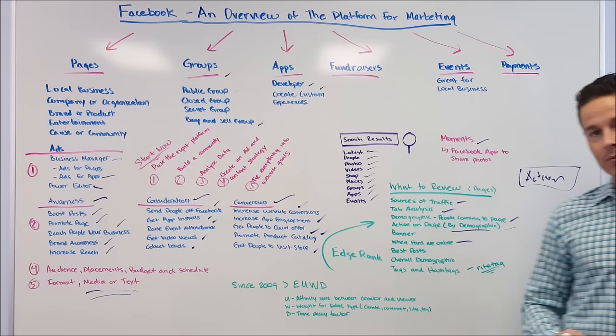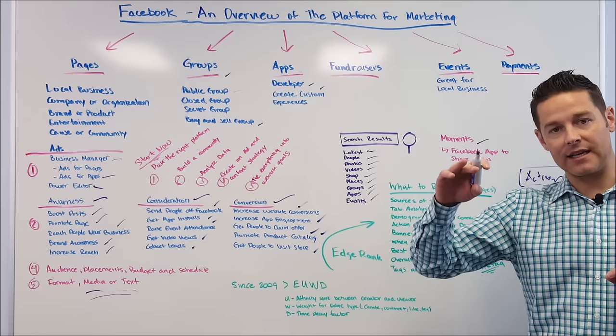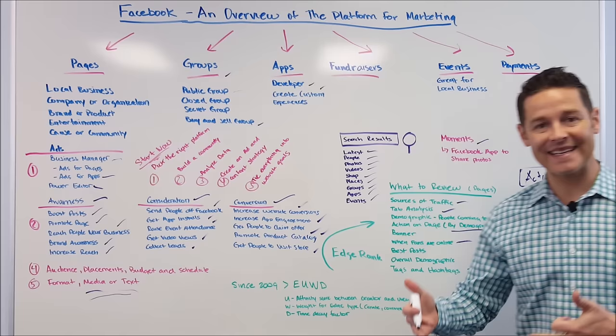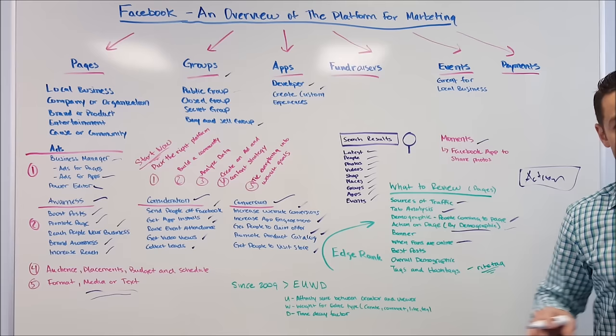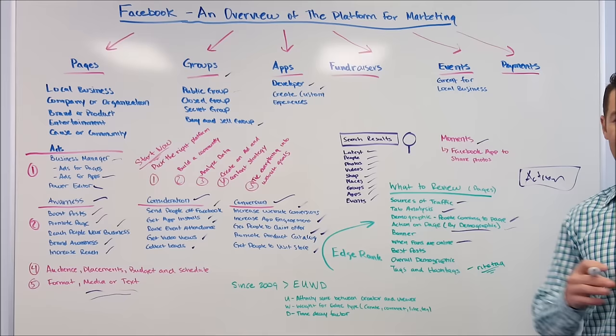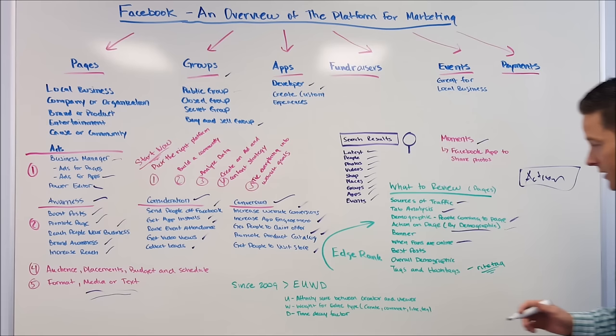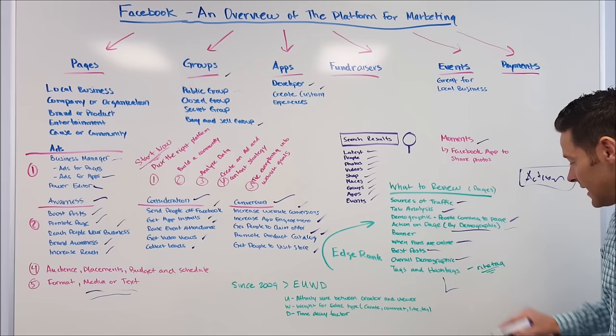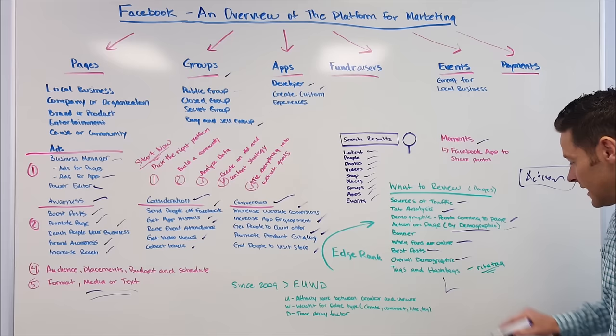You can also see when your fans are online and which posts have performed best. Go inside Facebook Insights, look at your best posts filtered by engagement and virality, then take that information and apply it to your future editorial calendar. If people are clicking and engaging with your posts, you'll rank higher on Facebook, pay less for ads, and have much higher organic reach. These tweaks really count — look at your best posts, understand your overall demographic, and make sure you're using the right tags and hashtags to achieve a higher edge rank.